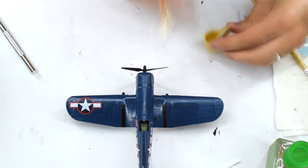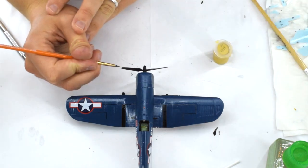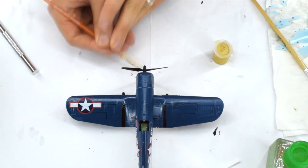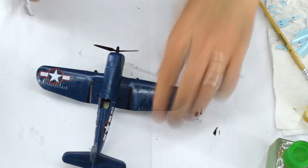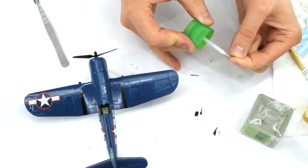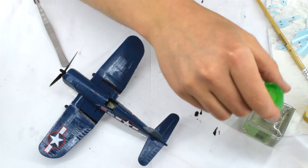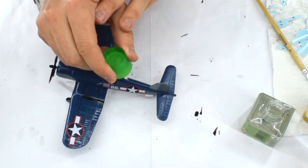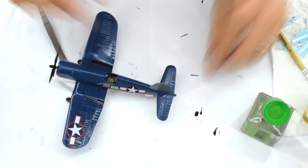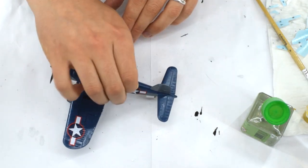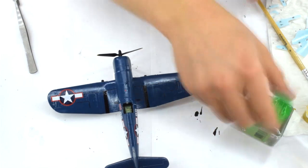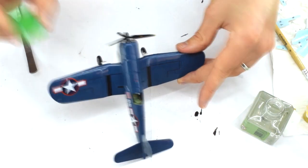I used Humbrol 24 matte trainer yellow on the tips of the propeller. Here, the small details including the pitot tube on the wing and the two aerials on the fuselage are being added. I placed a small amount of cement in their locating holes, then carefully positioned them. Take care here not to spoil the paint finish and also prevent the aerials from leaning to the side.